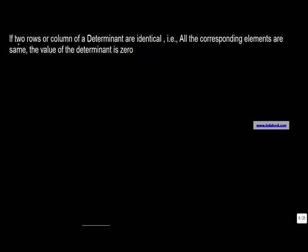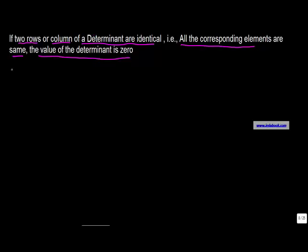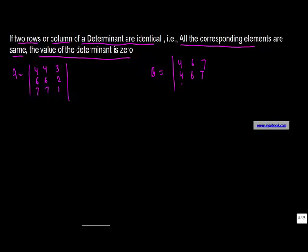Property 3 of determinants: if two rows or columns of a determinant are identical — that is, all the corresponding elements are the same — the value of the determinant is zero. Let's say A is equal to [4, 6, 7 / 4, 6, 7 / 3, 2, 1] and B is equal to [4, 6, 7 / 4, 6, 7 / 3, 2, 1]. This law states: if two rows or two columns of a determinant are identical, the determinant is zero.